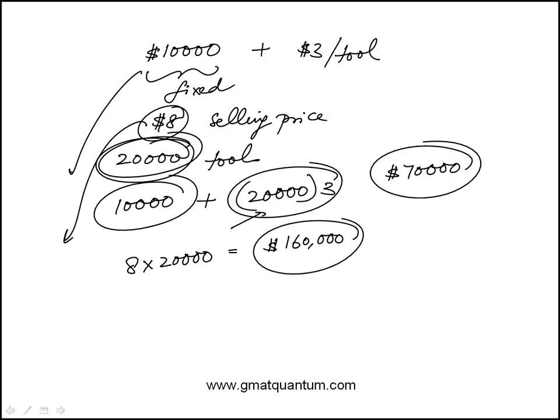So, the gross profit is the difference of the cost to produce those tools and the income from sales. We're looking at the difference, which is $90,000.